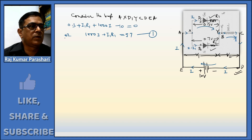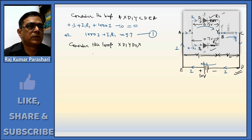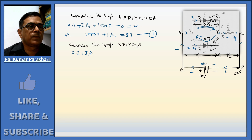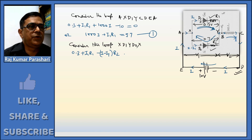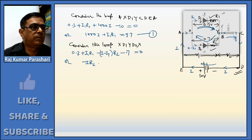Now consider loop X–D1–Y–D2–X. Current flows through D1, giving 0.3 plus I1·R1. Then current flows through diode D2, but the direction of the loop chosen is opposite to the direction of current, and hence we get minus (I − I1)·R2 minus 0.7 equals zero. This simplifies to: −I·R2 + I1·(R1 + R2) = 0.4. This is relation number 2.